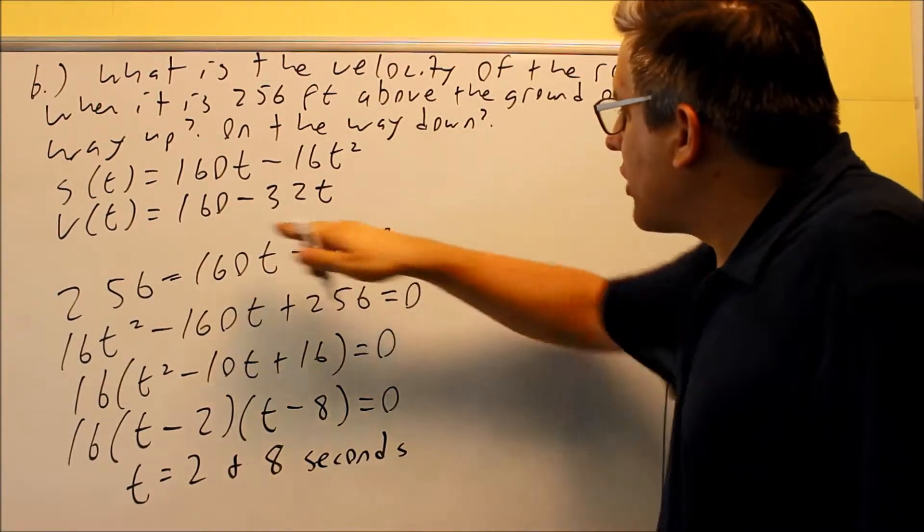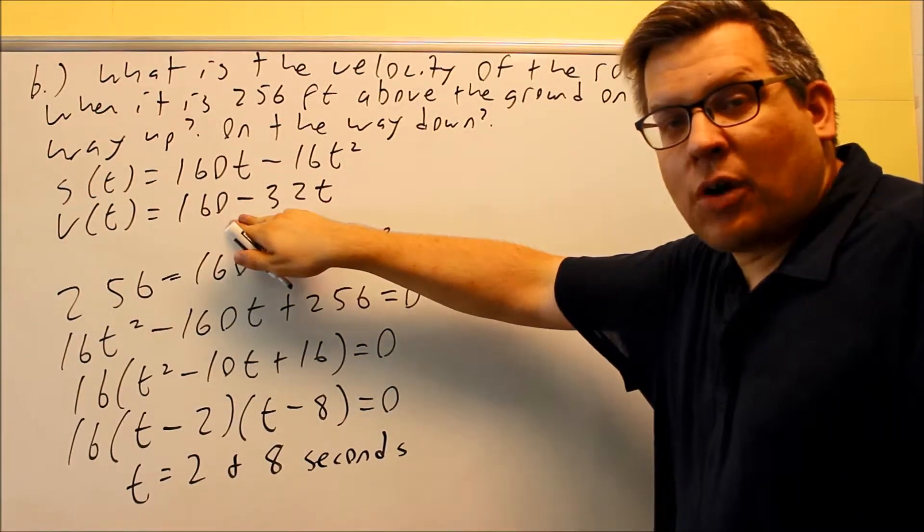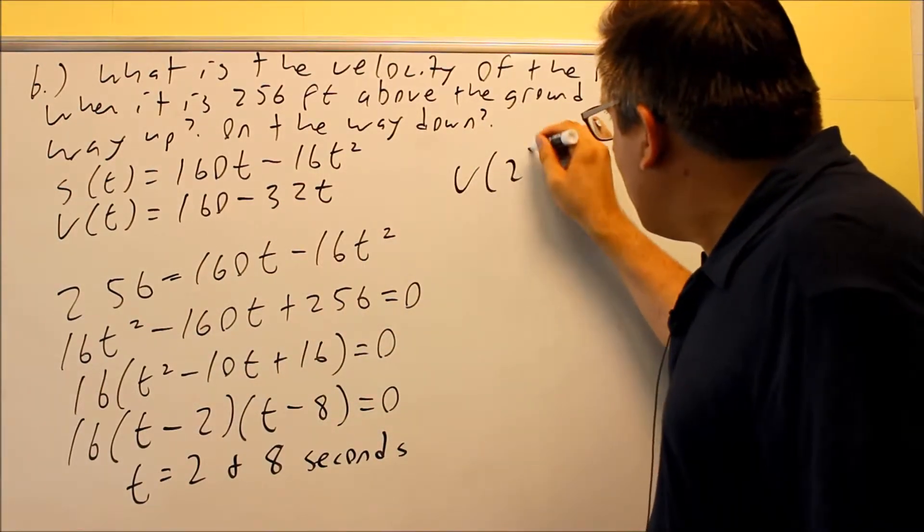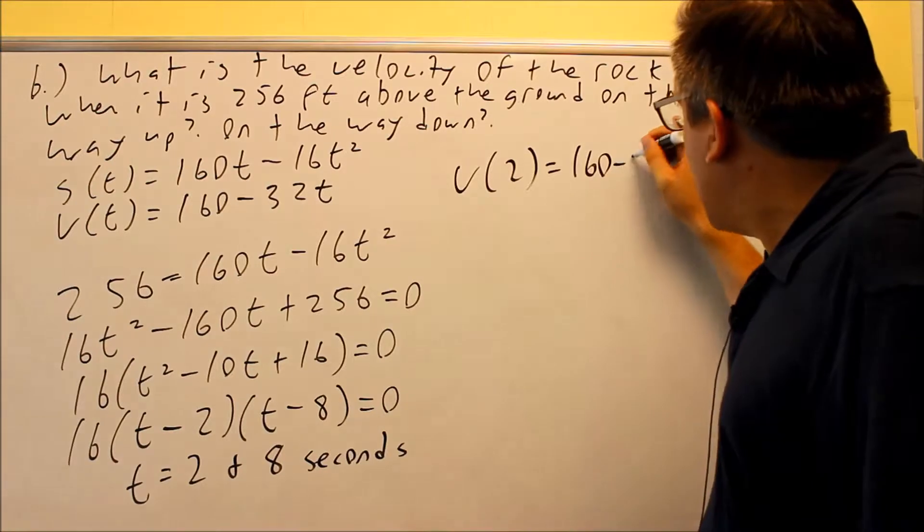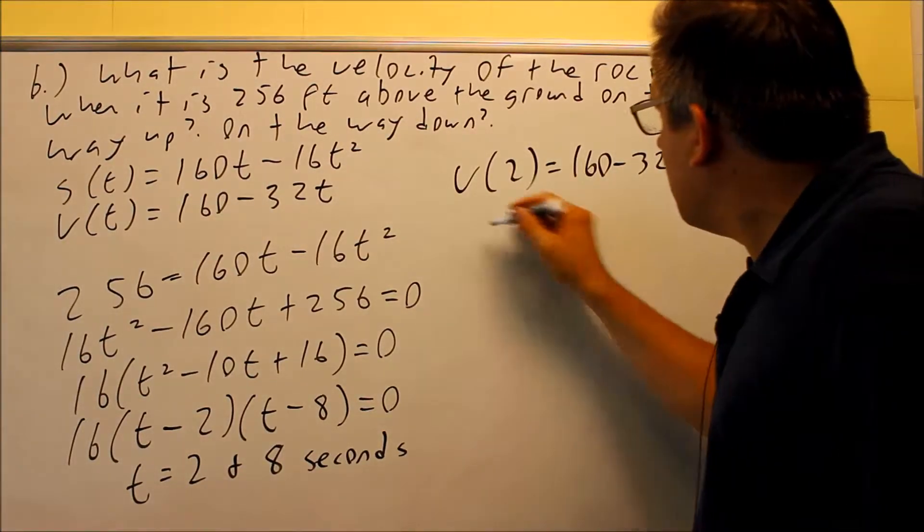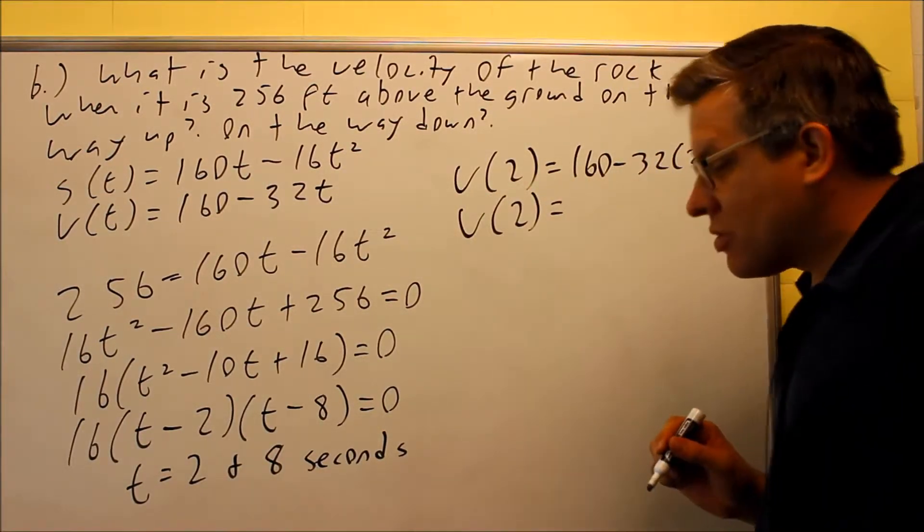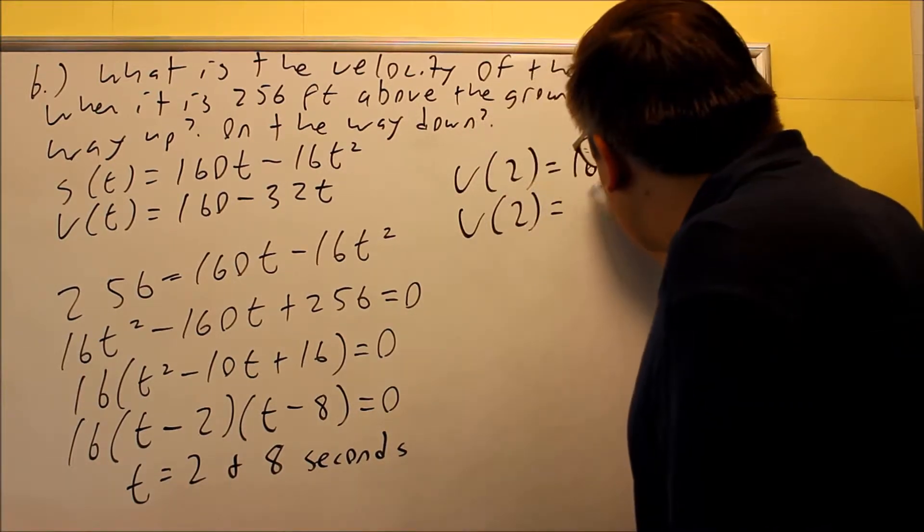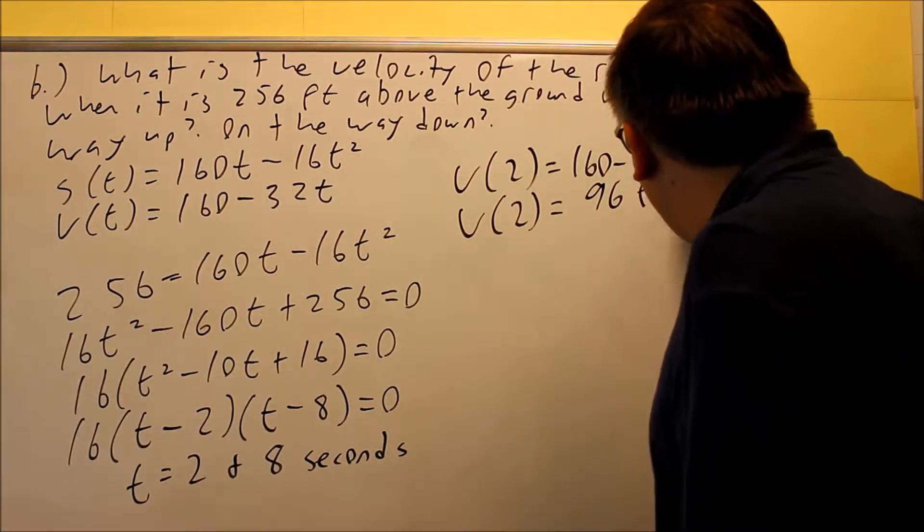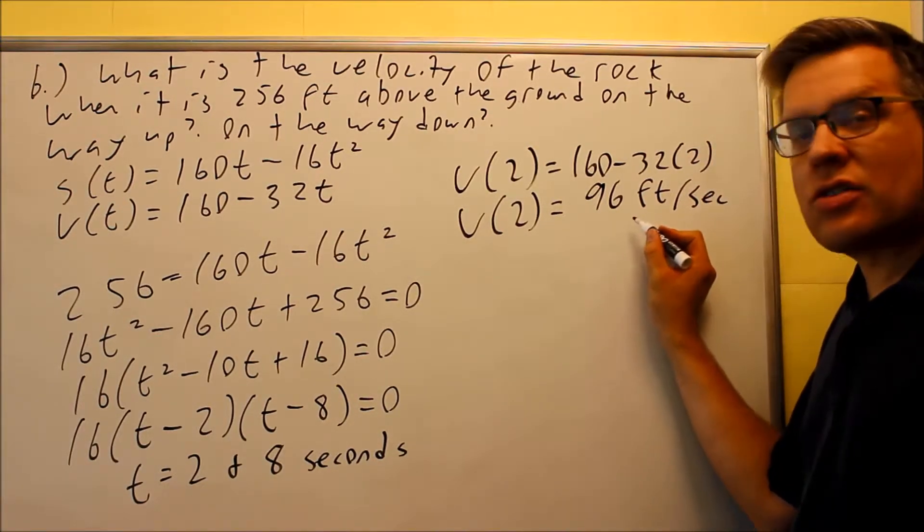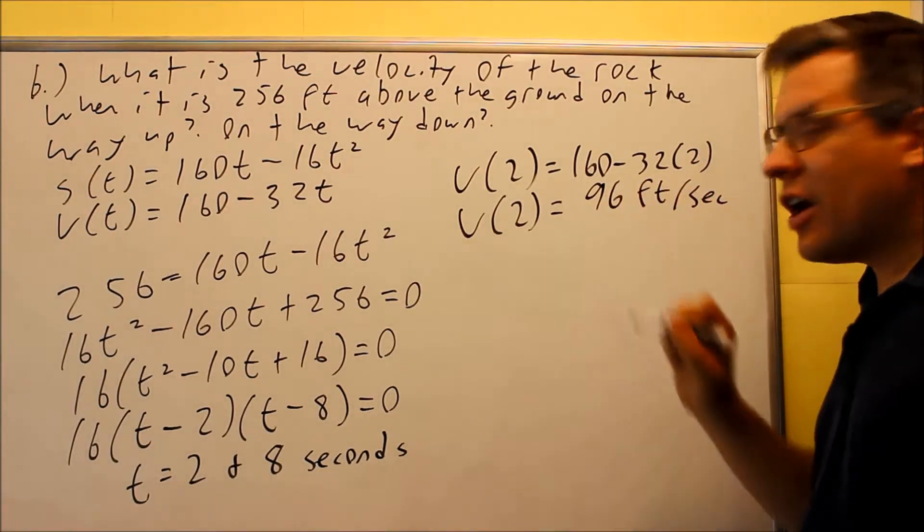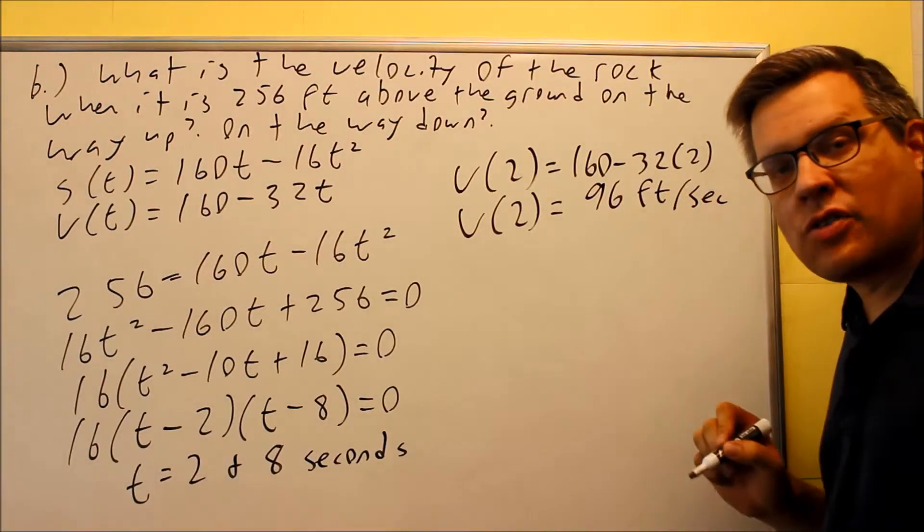So we're going to use our velocity. Here's our velocity function again we had in part a. I want to find v of 2, so I'm going to do 160 minus 32 times 2. So at 2 seconds I get 96, this will be feet per second as the units. In this case, the velocity on the way up is 96 feet per second since it's a positive velocity.